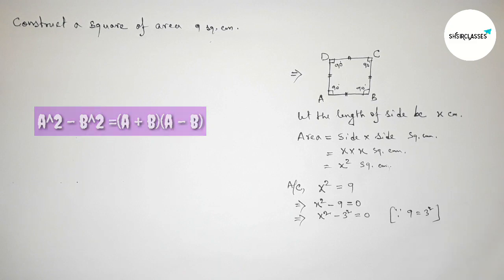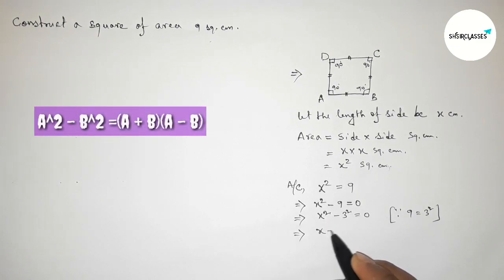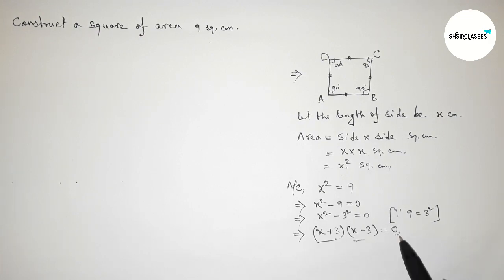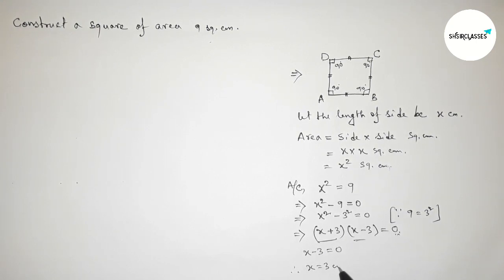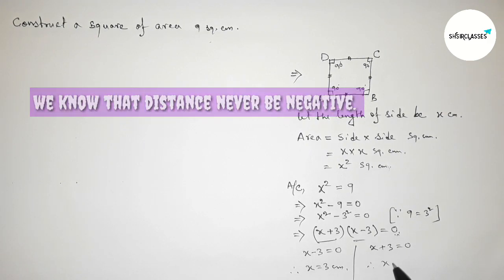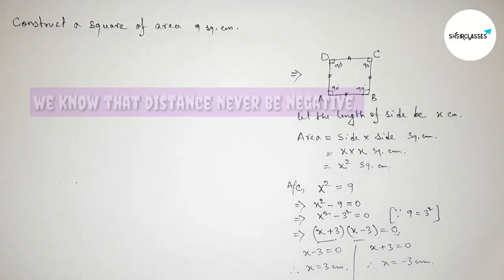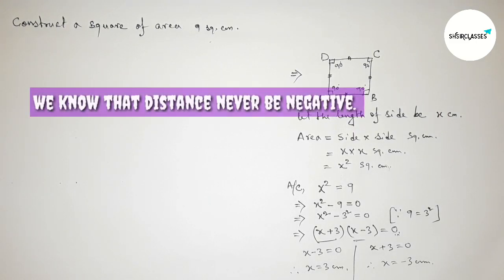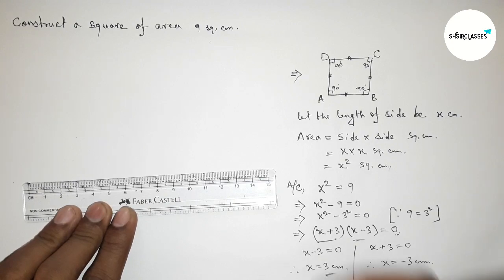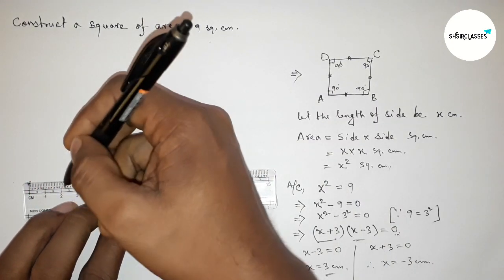Now applying the important theorem: a² minus b² equals (a + b)(a − b). So we get (x + 3)(x − 3) equals 0. From x minus 3 equals 0, we get x equals 3 centimeters. From x plus 3 equals 0, x equals minus 3, but distance can never be negative. So we take x equals 3 centimeters. Now we draw a line segment of length 3 centimeters.